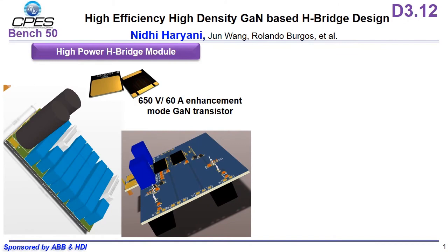This is the design for high power high density GaN-based H-bridge. The left picture shows the DC bus bar which has two plug-ins, and in each plug-in I plug in my phase leg module.